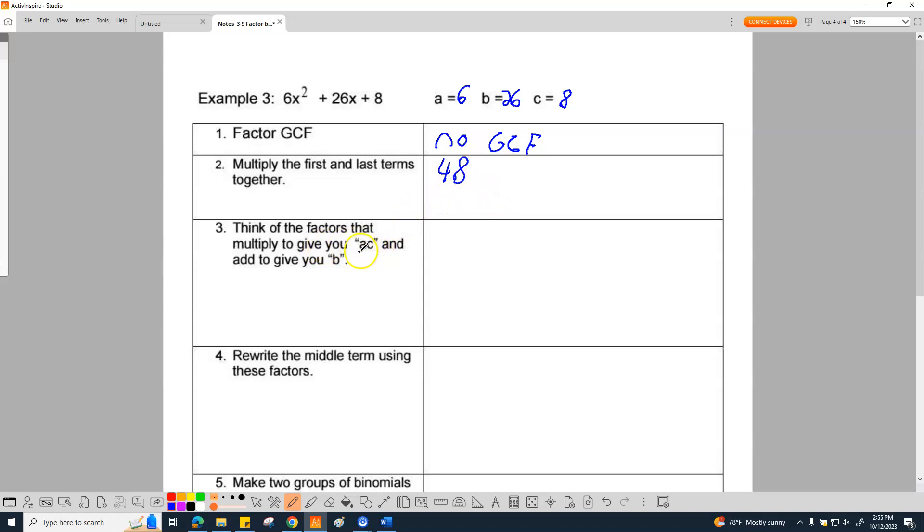Think of the factors that multiply to give you AC. That's 6 times 8. And add to give B. So I'm going to write my factors out. I have 1 and 48, I have 2 and 24, I have 3 and 16, I have 4 and 12, and then I have 6 and 8. These are my factors for 48.